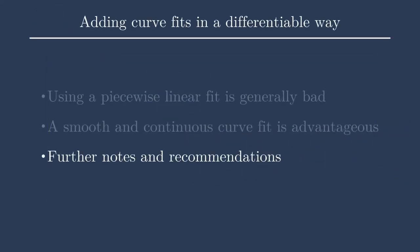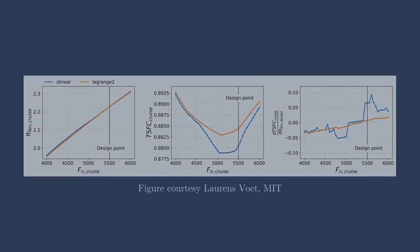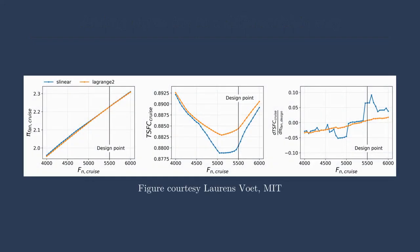And then I have a few more notes in one specific example here. This figure is courtesy Lawrence Vutt from MIT. He was doing engine design work and was using a piecewise linear fit for some of the thermodynamic data. However, he found that the optimization did not converge well. And this is a pretty telling plot that I don't need to get into all the details of, but I want to show you that different parts of the engine model were greatly affected by different interpolation methods.